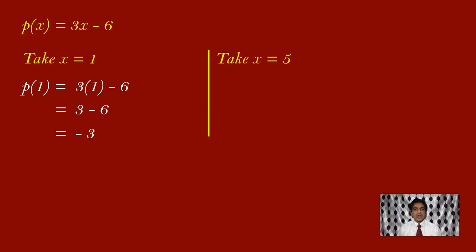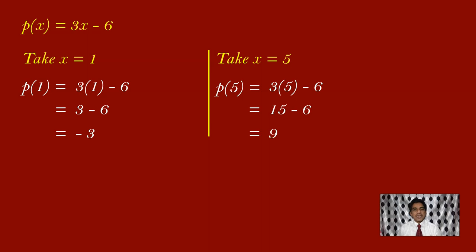Let us do one more. Now I'll take x is equal to 5. So we have to find p of 5. p of 5 is equal to 3 into 5 minus 6. 3 fives are 15, minus 6. 15 minus 6 is 9.